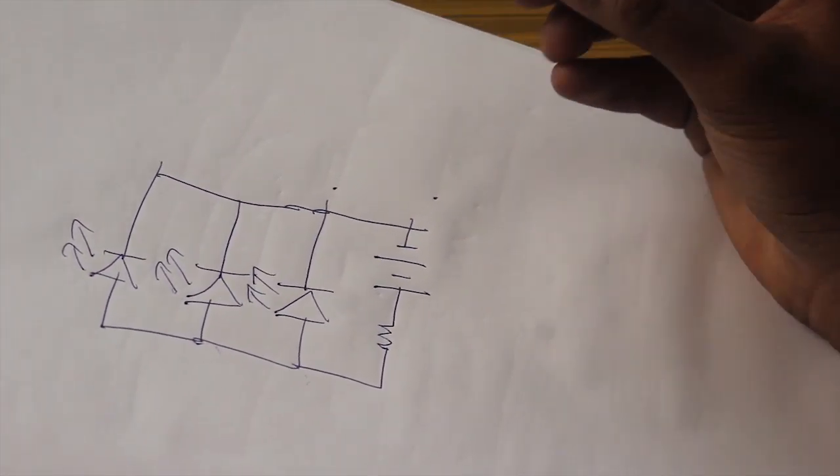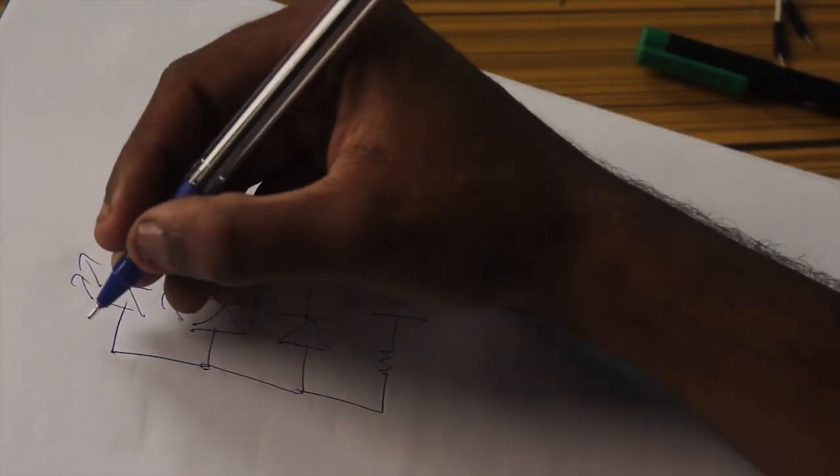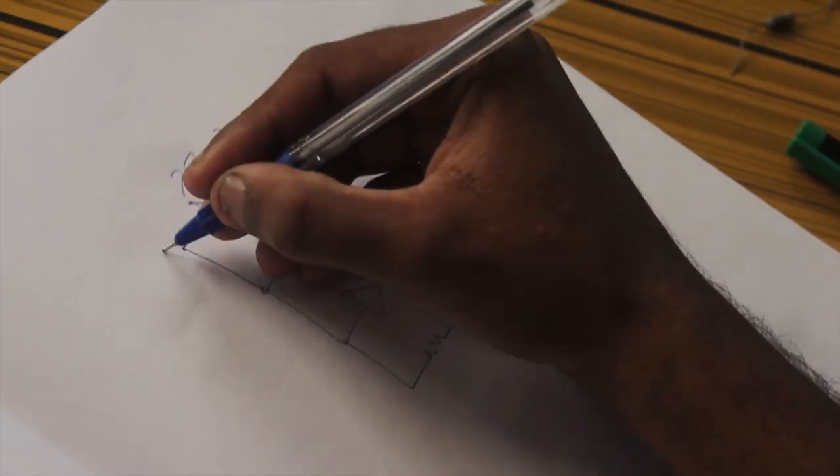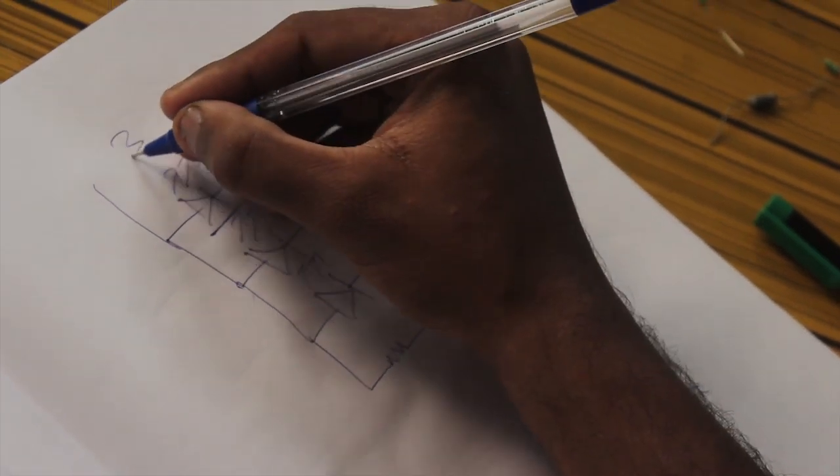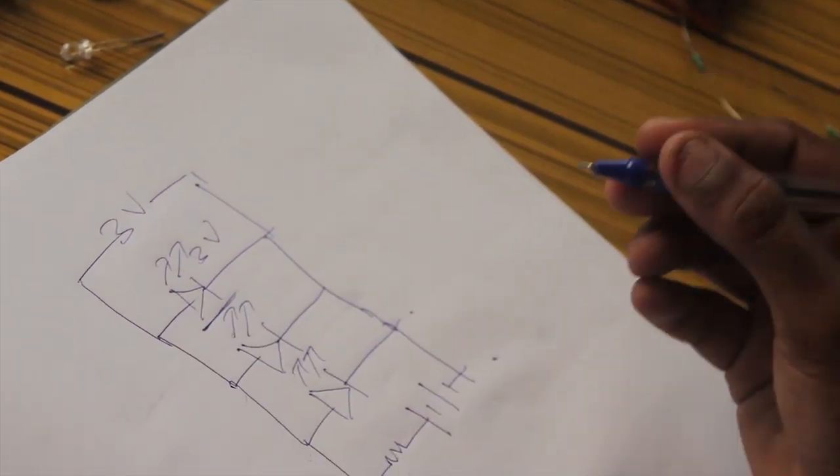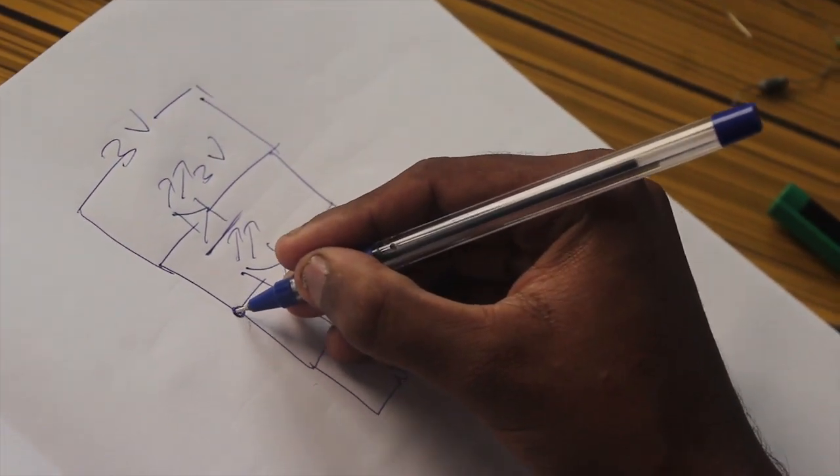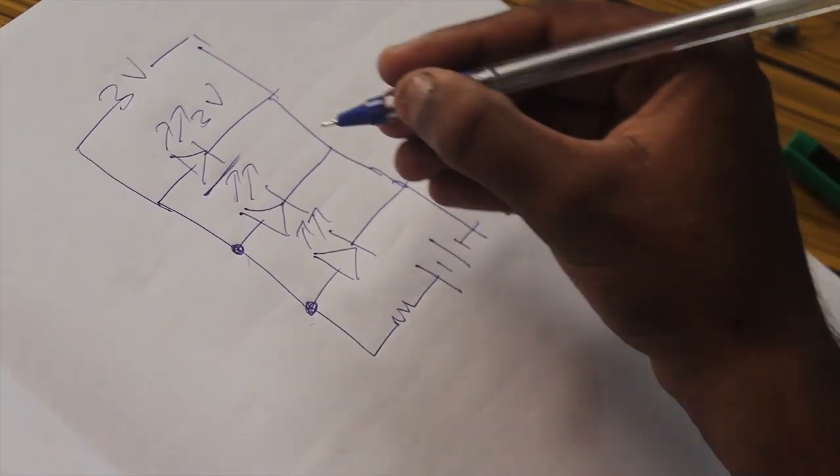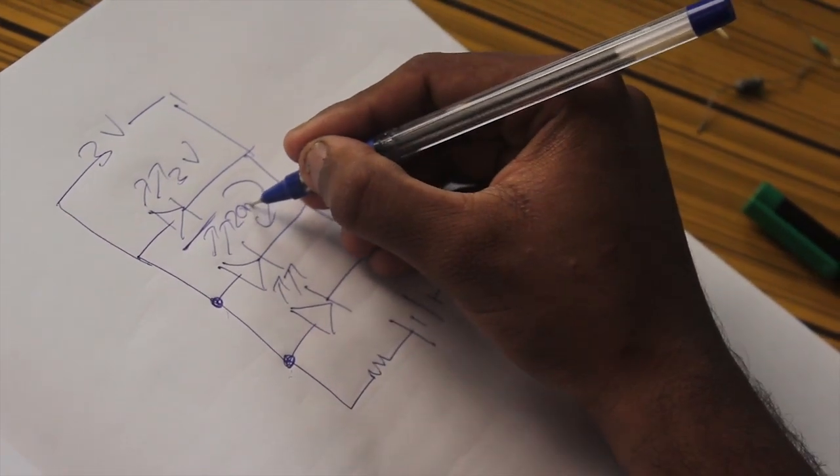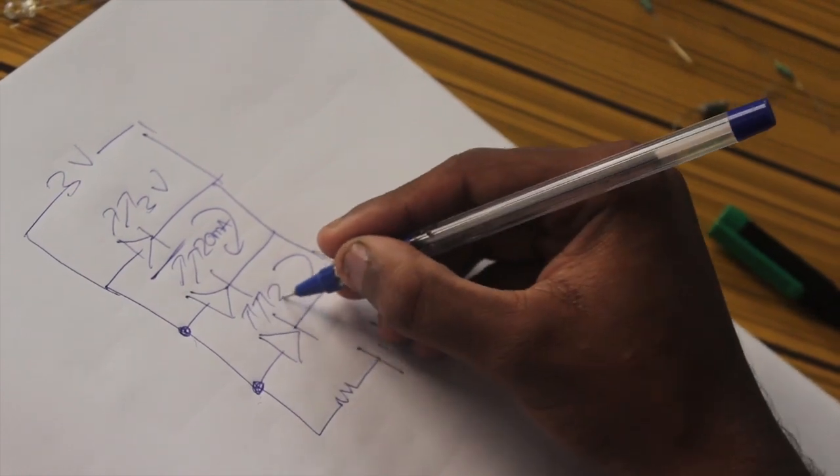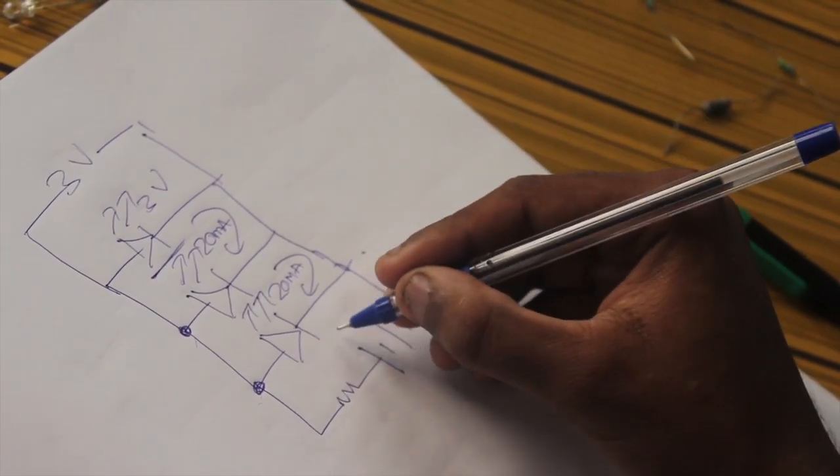In this parallel circuit, the voltage remains the same. If this LED's voltage is 3V, it will remain 3V throughout the circuit. The current gets divided in each of the parallel parts. So here 20 milliamps, here 20 milliamps, and here 20 milliamps.